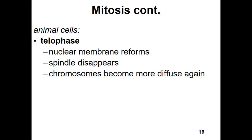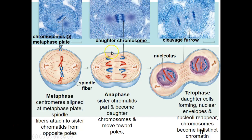In telophase, the nuclear membrane reforms around all the chromosomes, spindle fibers disappear, and the chromosomes relax into their chromatin form. During anaphase and telophase, cytokinesis also occurs — you can see the invagination of the cell and a cleavage furrow forming. Each of the resulting cells has a nucleus with the same four chromosomes as the original parent cell.